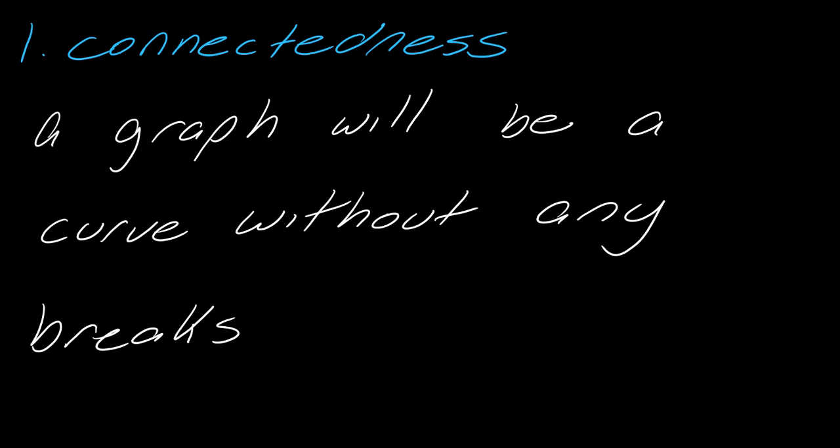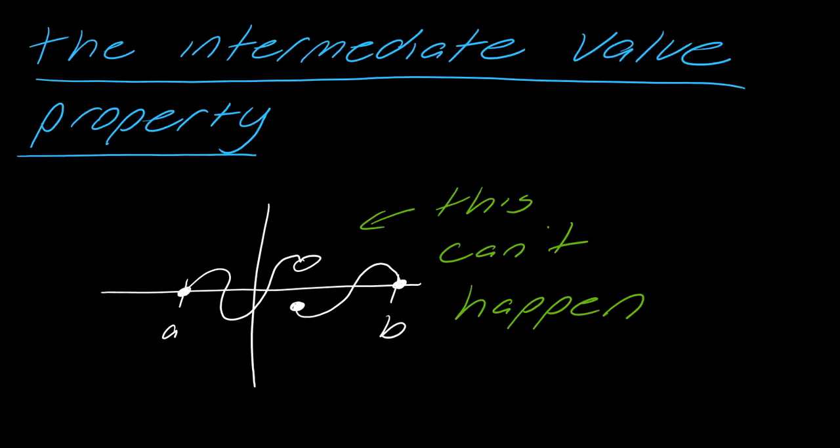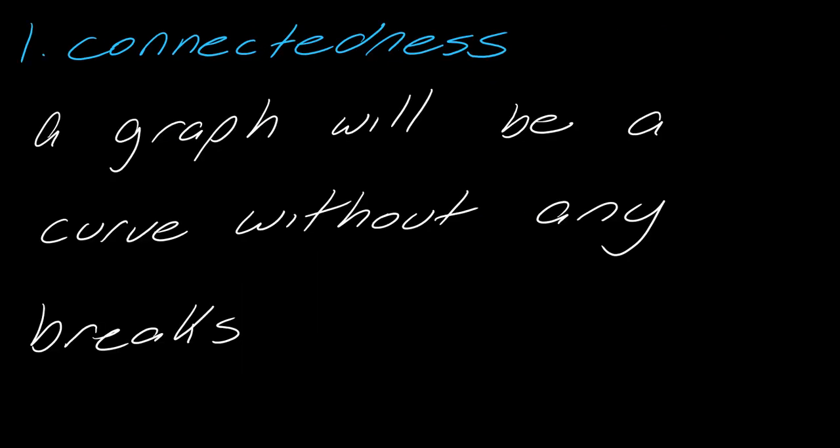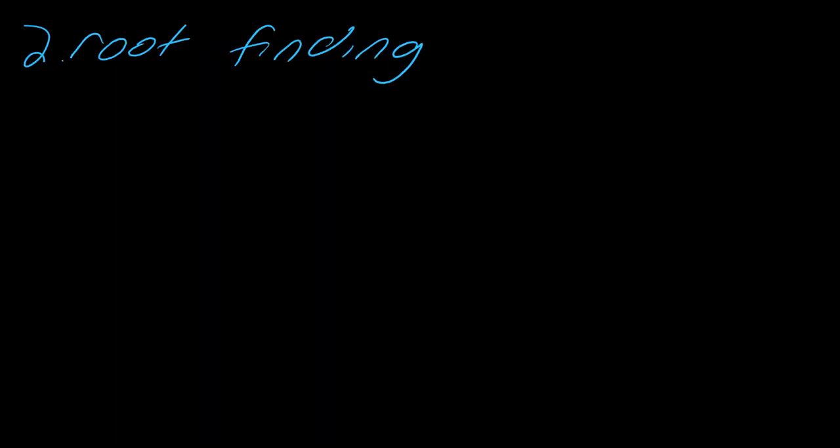It's saying that a graph will be a curve without any breaks. So one of the consequences then is that you have to have this, you can't have this. So that's the idea of connectedness. So like I said, it seems weird that we point that out, but there are certain exercises where this will come into play. So I'll show you that in a moment.